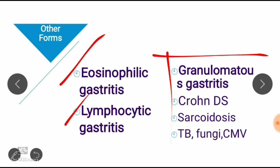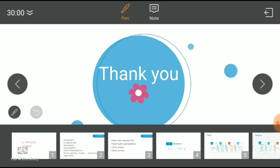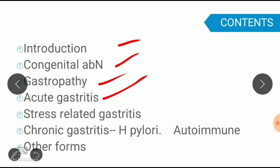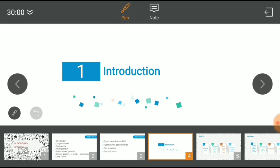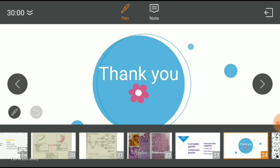In this video we covered the introduction, congenital abnormalities, gastropathies, acute gastritis, and chronic gastritis including H. pylori and autoimmune types. In the next video we will cover Cushing and Curling ulcers and other rare forms of gastritis. Thank you.